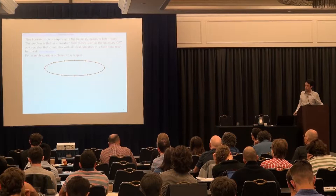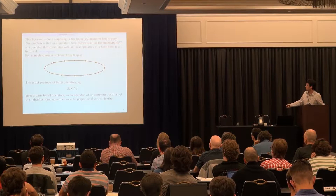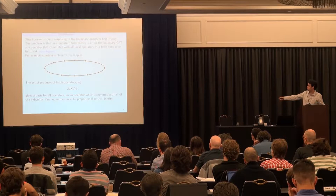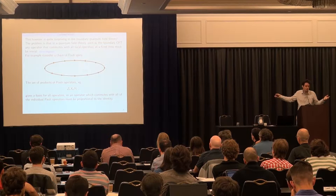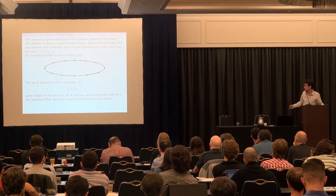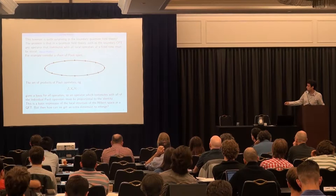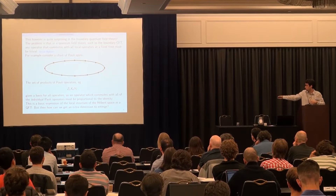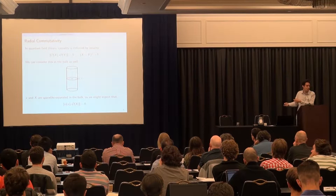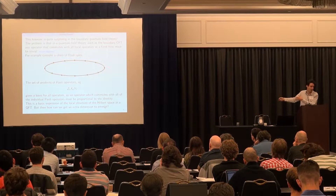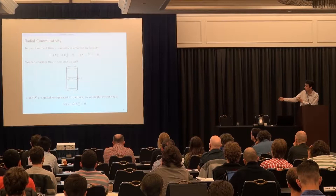In a spin chain, the set of all operators are generated by products of Pauli operators, so if you have an operator that commutes with all the single-site Pauli operators, it commutes with everything and is proportional to the identity. But then what's going on with ADS-CFT? The correspondence seems to demand additional operators that commute with all of these but are non-trivial — for example, it could be us in the center, and I don't feel like I'm proportional to the identity.